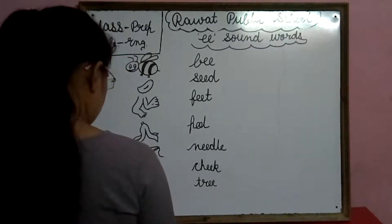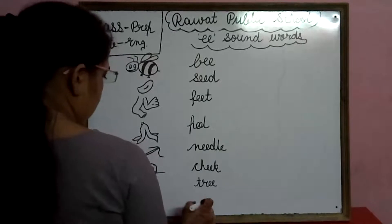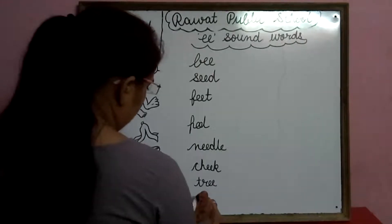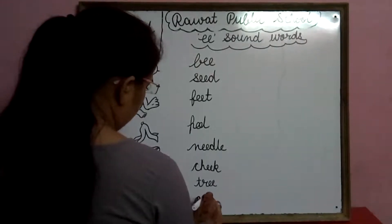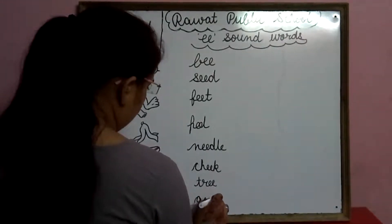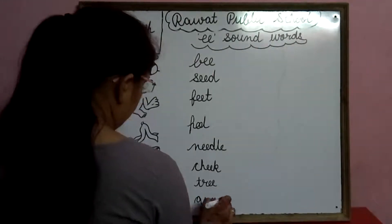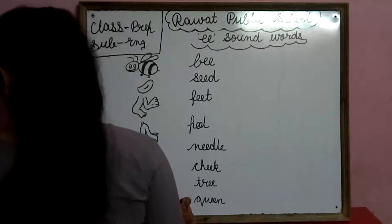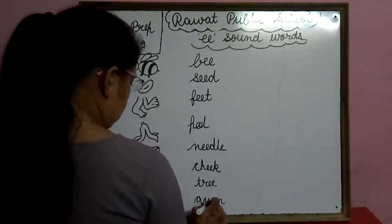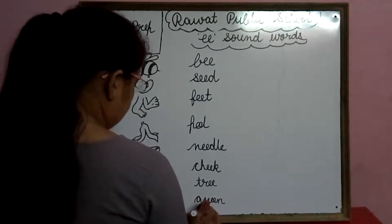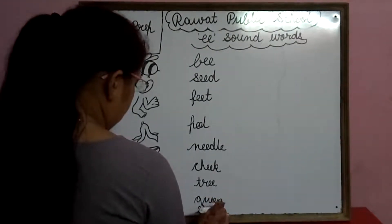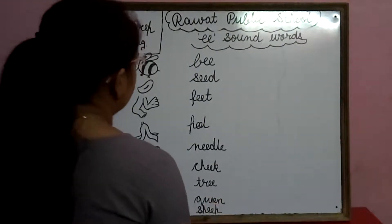Kis ka picture hai? Twin — queen: Q-U-double-E-N. Aura tau, sheet — sheep: S-H-double-E-P.